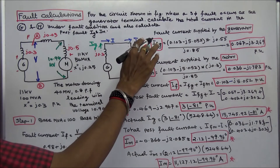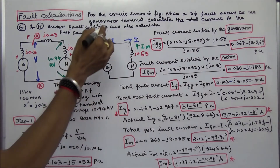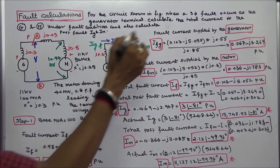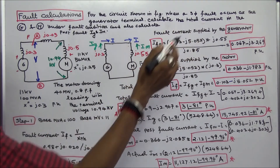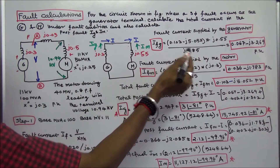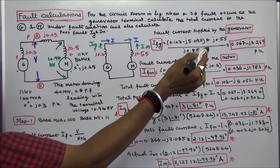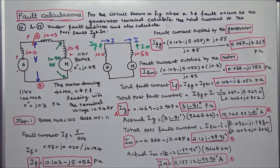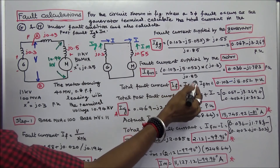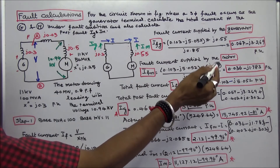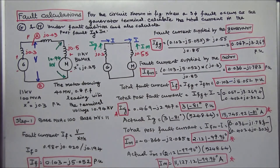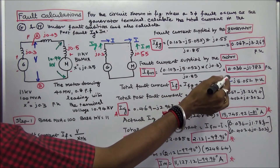Next we find the fault current supplied by the generator and motor using the current division rule. Fault current supplied by the generator IFG = IF × J.55 / J.85 = 0.067 − J3.269 per unit. Similarly, fault current supplied by the motor IFM = IF × J.3 / J.85 = 0.036 − J1.783 per unit. Therefore total fault current IF = IFG + IFM = 0.103 − J5.052 per unit.